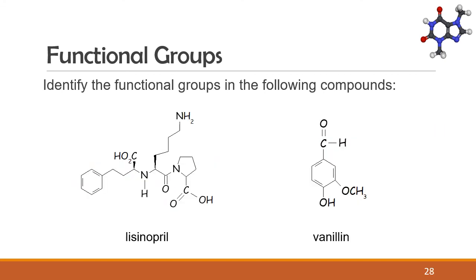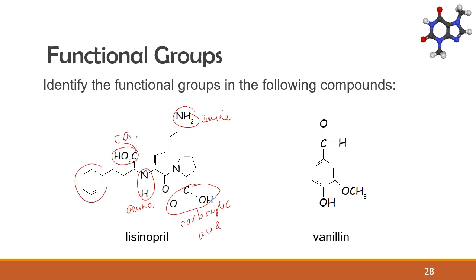Now let's have another pair of organic compounds. Let's start with lisinopril. Lisinopril has four functional groups: two amines, two carboxylic acid groups, an arene, and an amide.